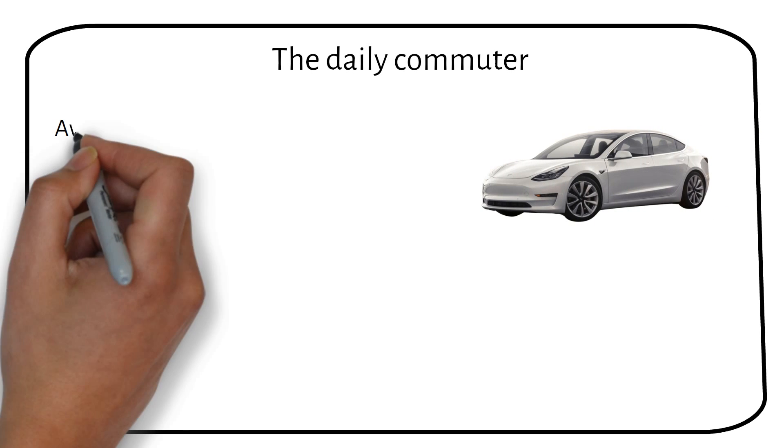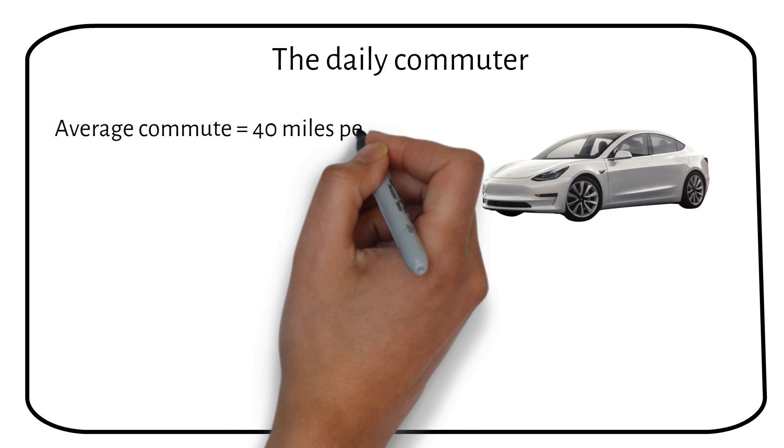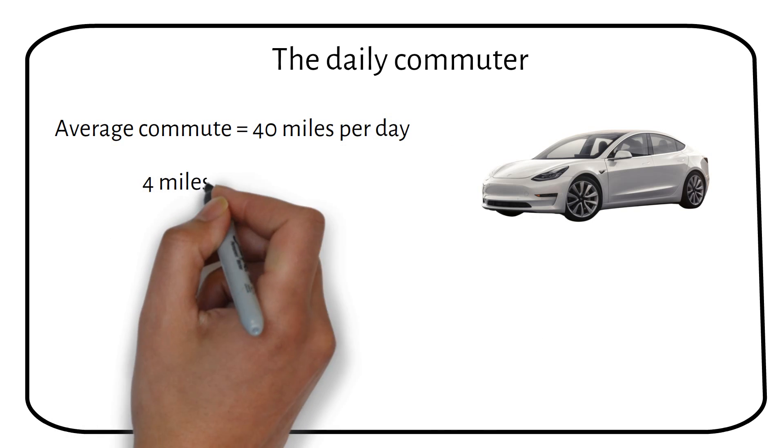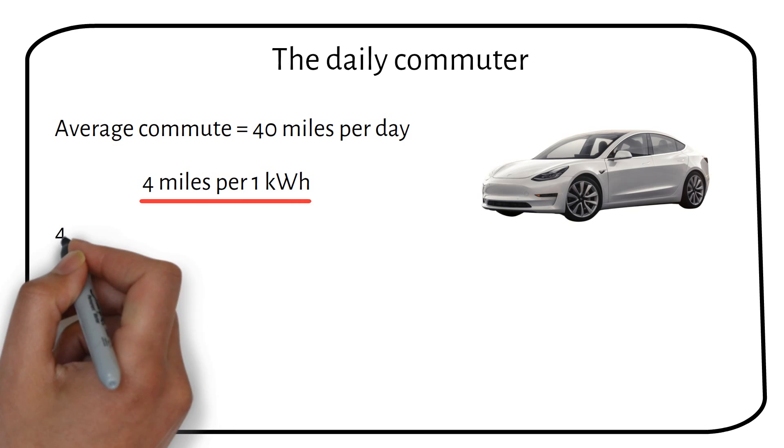The average American commutes about 40 miles per day. While I don't personally drive a Tesla, data suggests that 4 miles per kilowatt hour is a conservative figure. Many reach up to 4.5 or even 5 miles per kilowatt hour. However, for our calculations, we will stick with 4 miles per kilowatt hour,